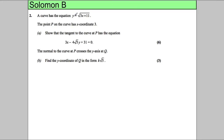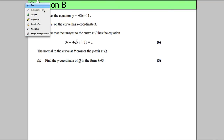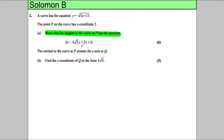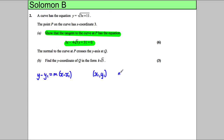We've got a curve with the equation y equals the square root of 3x add 11. The point P on the curve has x-coordinate 3. We're supposed to show that the tangent to the curve has a given equation. We need an equation of the form y subtract y1 equals m times x subtract x1, where x1, y1 is a point on the curve where the tangent touches it, and m is the gradient.